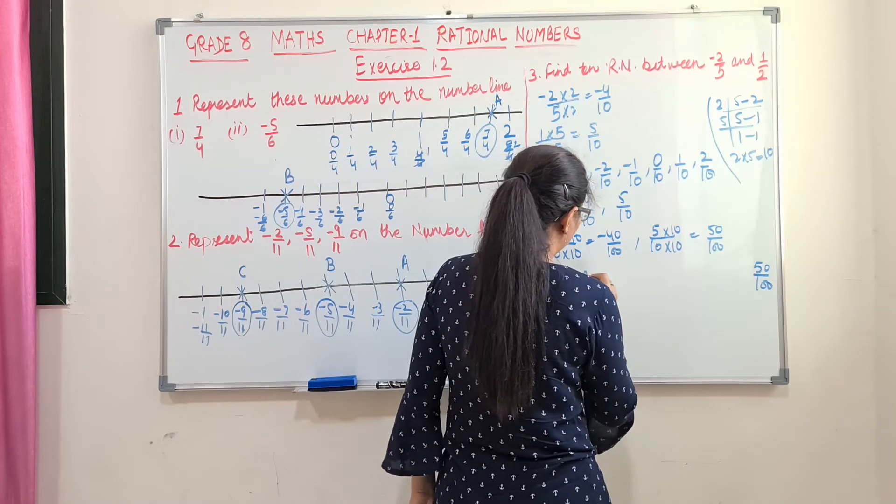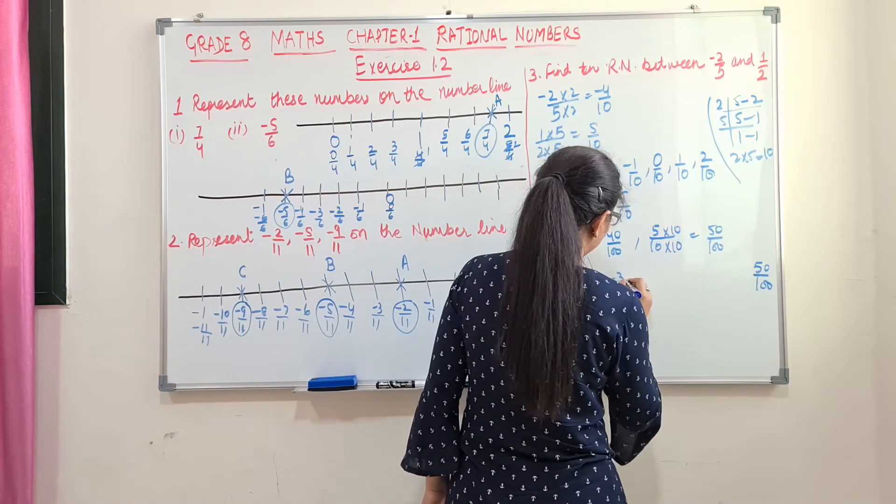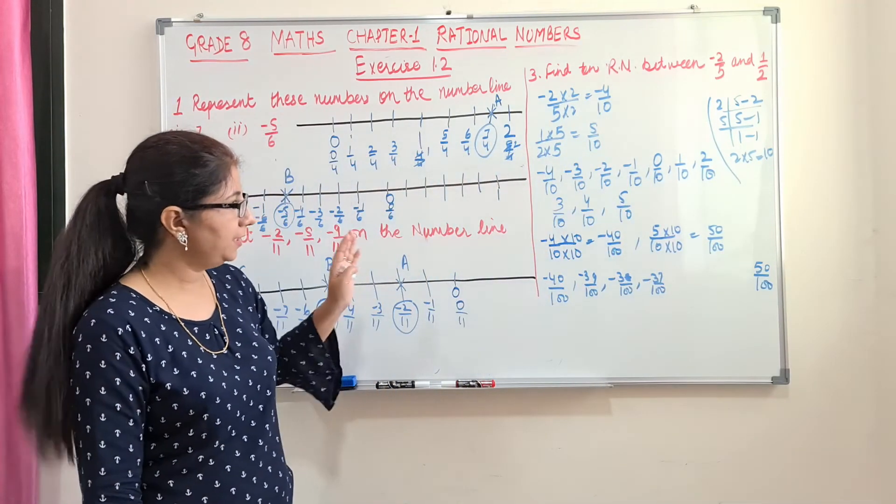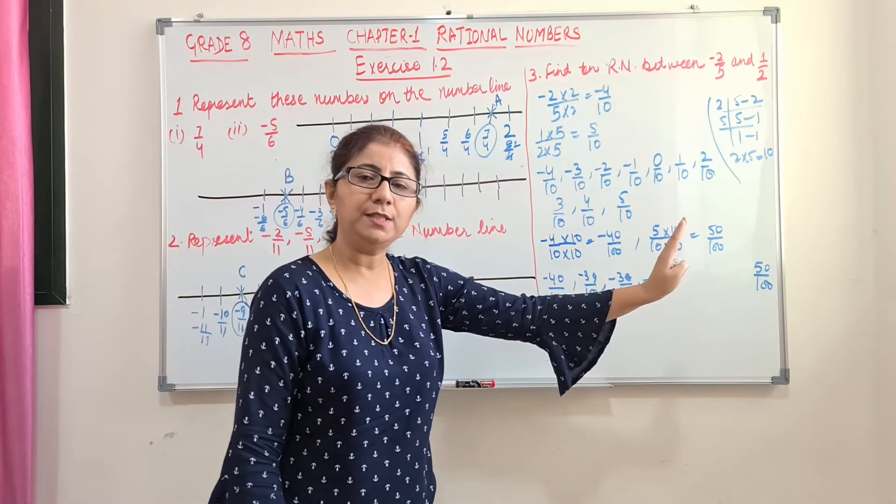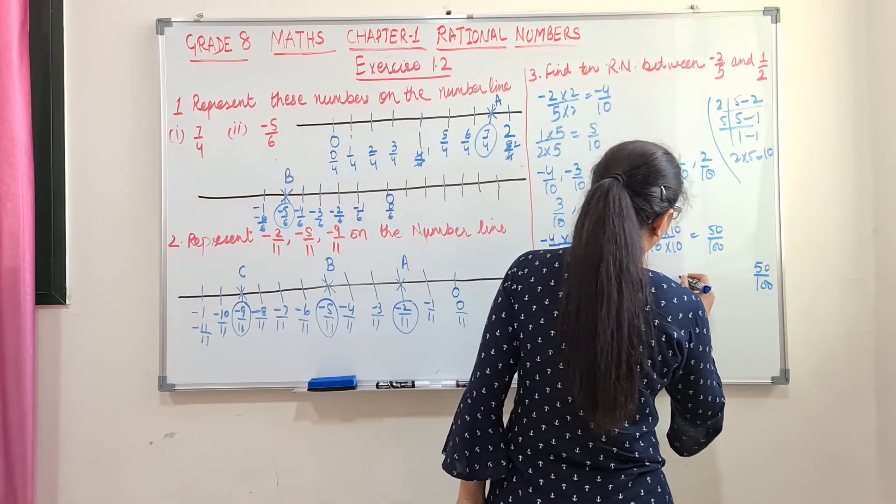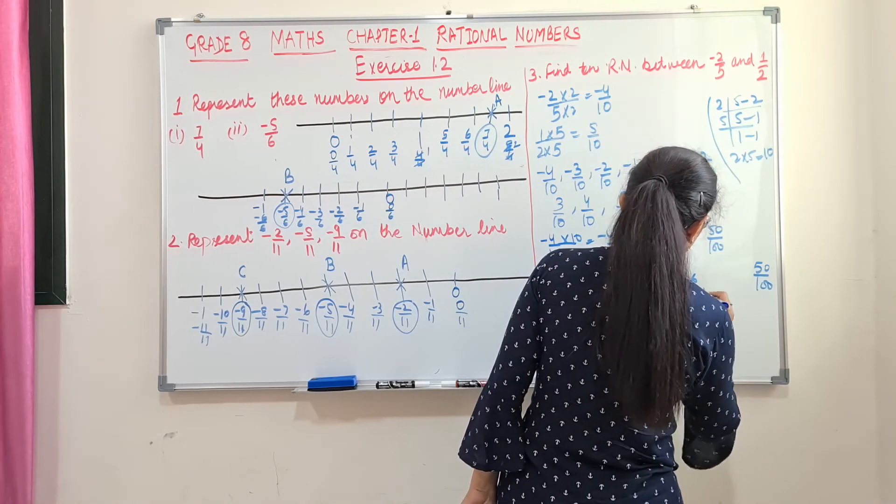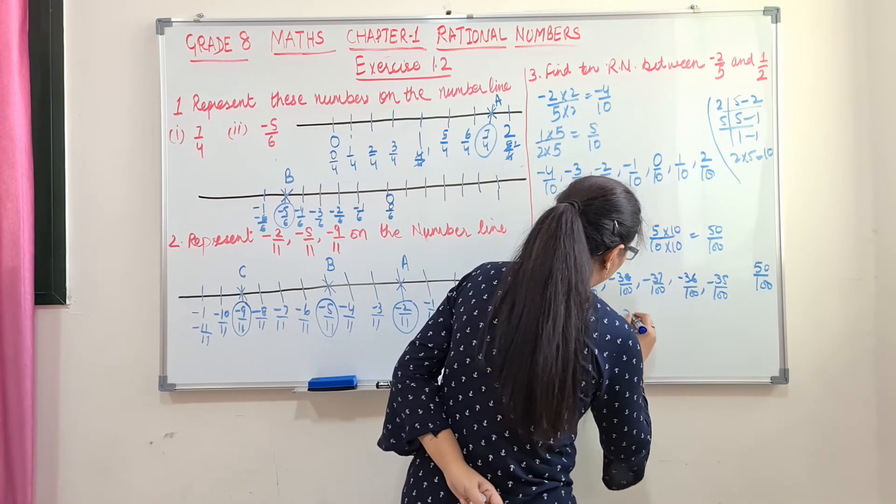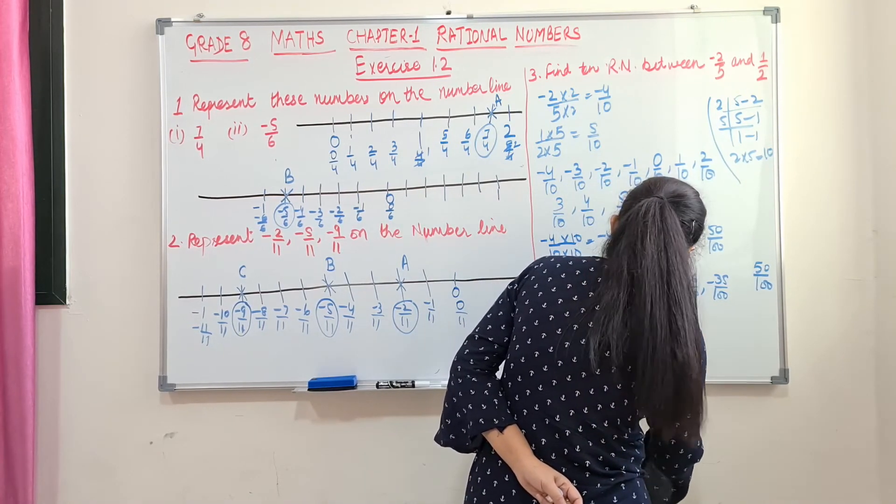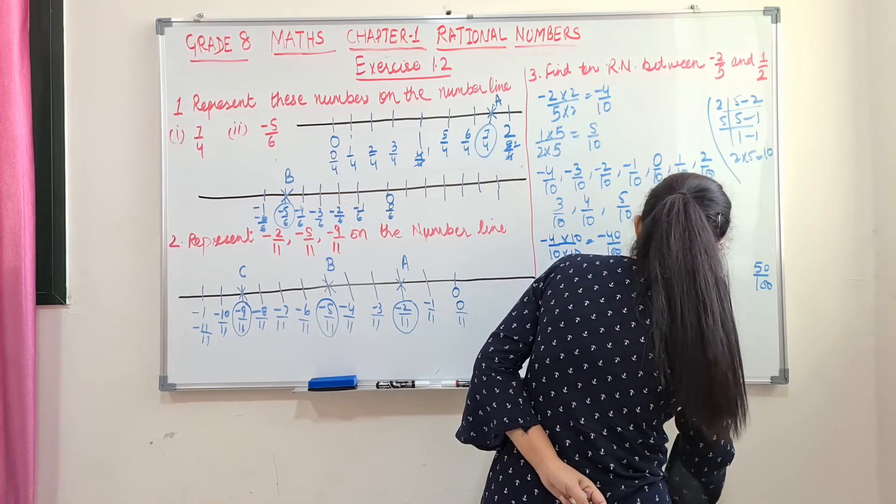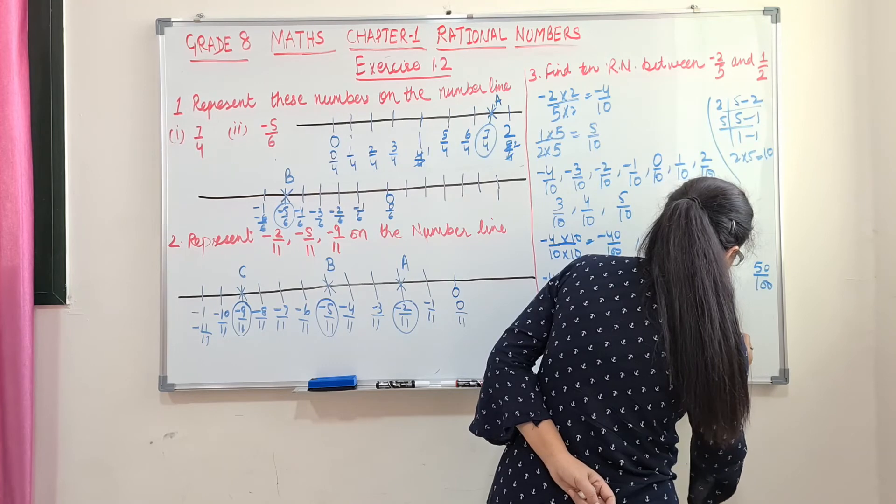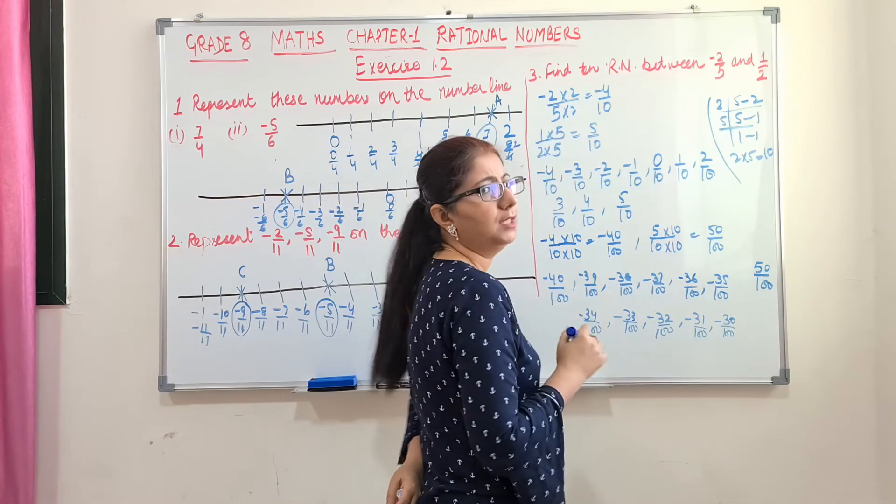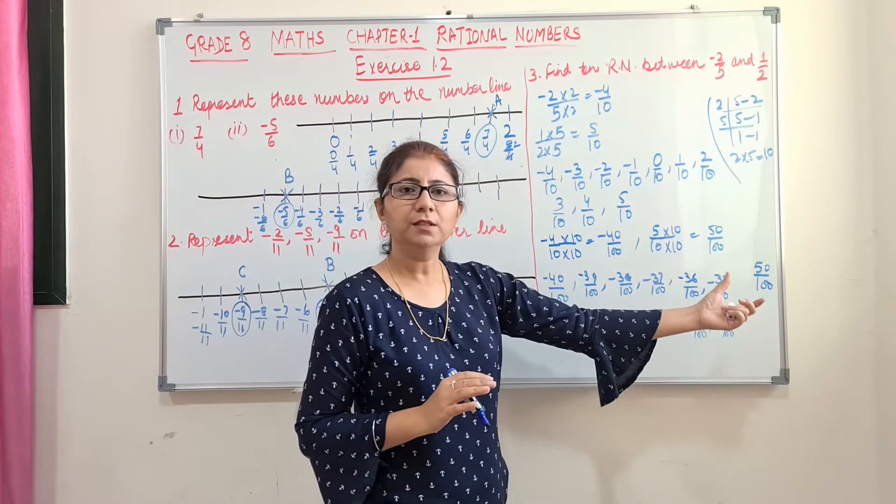So write any numbers like minus 39 by 100, minus 38 by 100, minus 37. Why I am decreasing these numbers? Because negative numbers when it is going towards 0, these numbers are increasing. So minus 39, minus 38, minus 37, minus 36, minus 35, then minus 34, minus 33, minus 32, minus 31, minus 30. 1, 2, 3, 4, 5, 6, 7, 8, 9, 10. So these 10 numbers you can write any 10 numbers of your choice in between this range. I hope you understand the question.